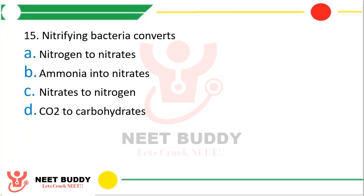Question 15: Nitrifying bacteria converts? Option A, nitrogen to nitrates. Option B, ammonia to nitrates. Option C, nitrates to nitrogen. Option D, carbon dioxide to carbohydrates. The correct answer is Option B — ammonia to nitrates.